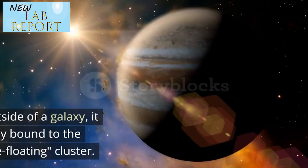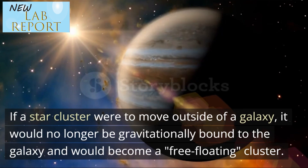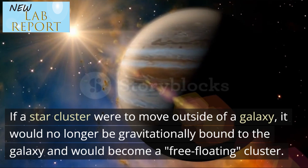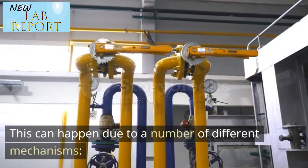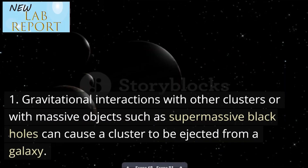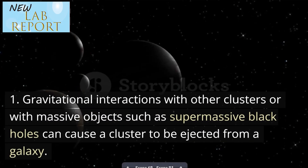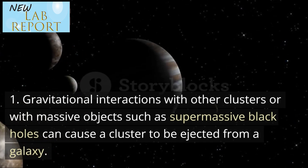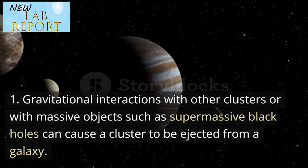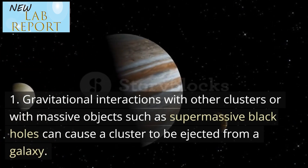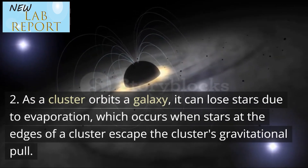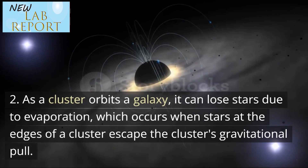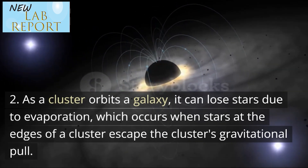What happens if a star cluster moves outside a galaxy? If a star cluster were to move outside of a galaxy, it would no longer be gravitationally bound to the galaxy and would become a free-floating cluster. This can happen due to a number of different mechanisms. Gravitational interactions with other clusters or with massive objects such as supermassive black holes can cause a cluster to be ejected from a galaxy. As a cluster orbits a galaxy, it can lose stars due to evaporation, which occurs when stars at the edges of a cluster escape the cluster's gravitational pull.